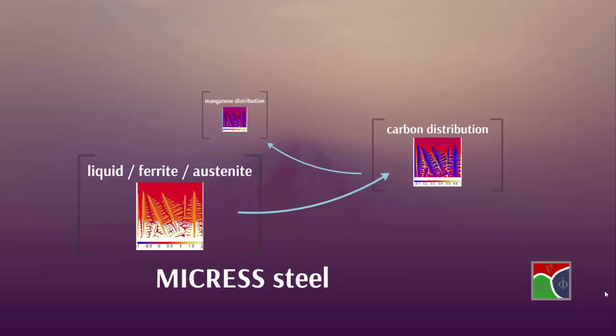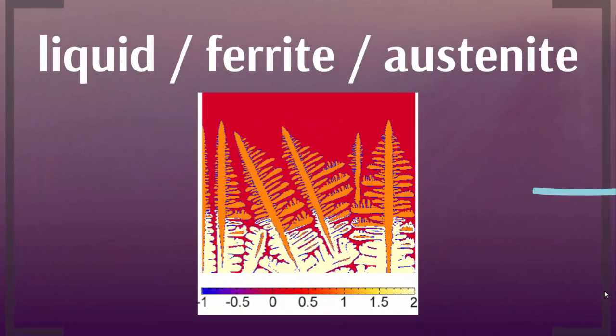Here is one of the examples for directional solidification of a simple steel grade. What you see are the different phases: the phase fields for the liquid in red, for the ferrite in orange, and for the austenite in the cream-type color.